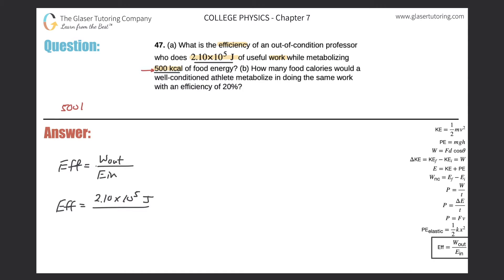So we have 500 kilocalories. To convert that into joules, we put kilocalories on the bottom and joules on the top. We know that for every one kilocalorie there are 4,184 joules. So it's simple straight multiplication: 500 times 4,184. This works out to be about 2.09 times 10 to the 6 joules.